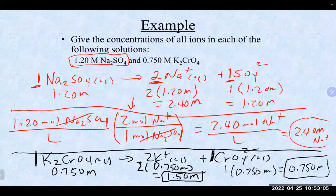Obviously if something broke apart in a one-to-three relationship, you would simply multiply the molarity by three for that ion.